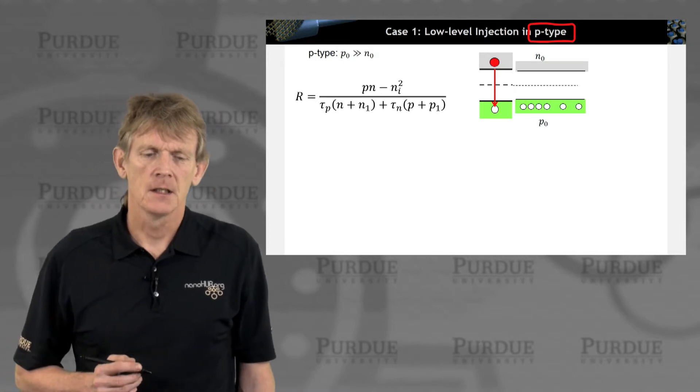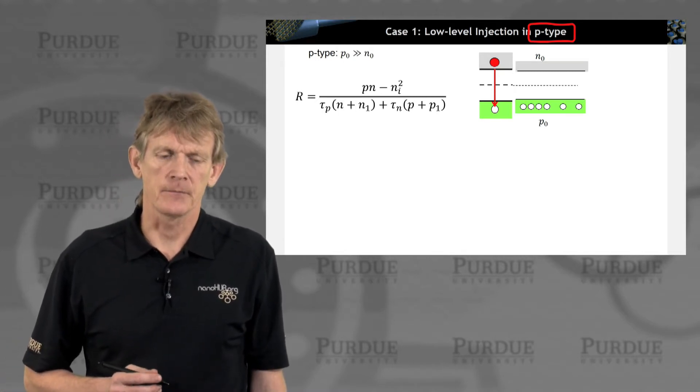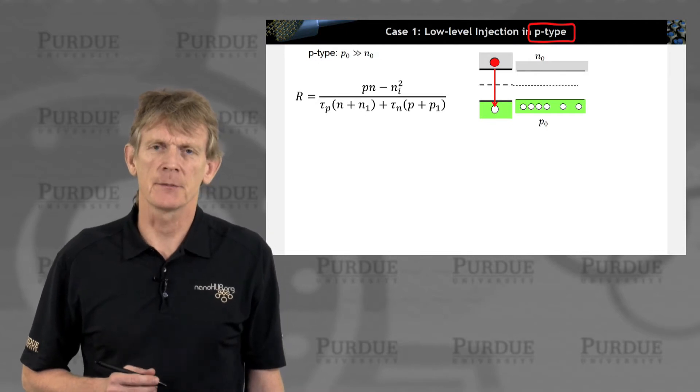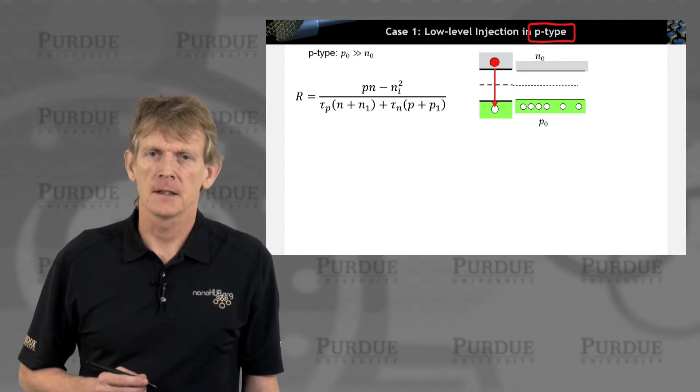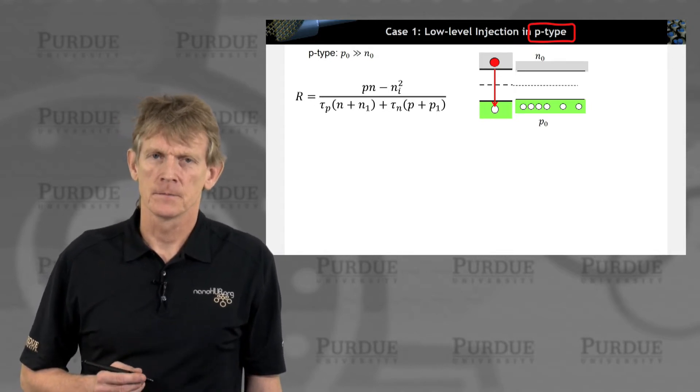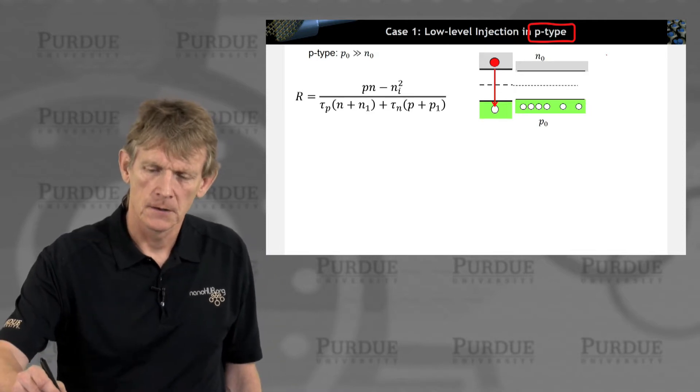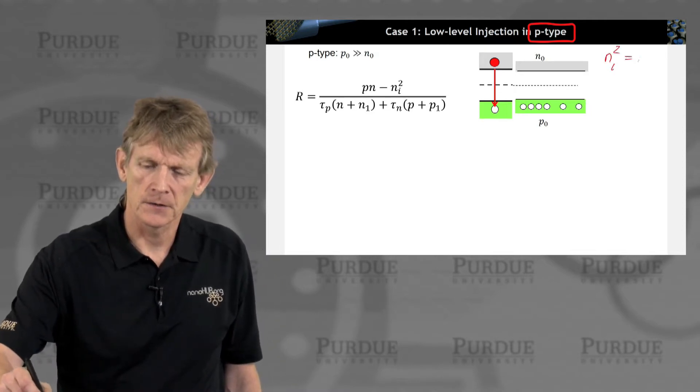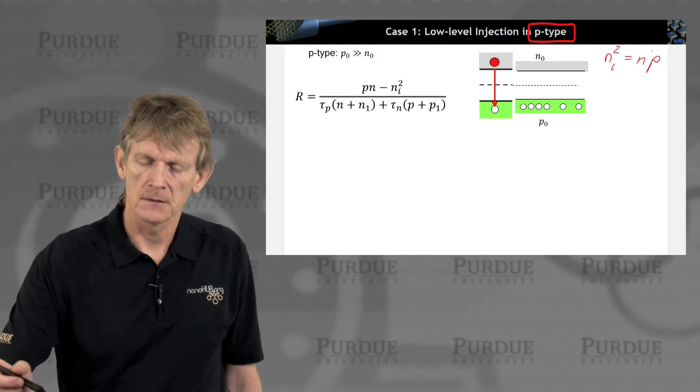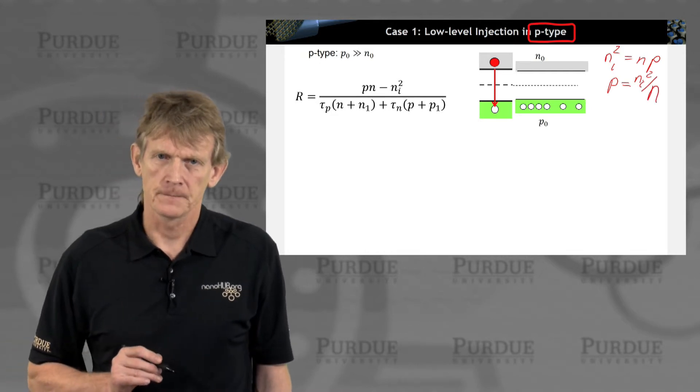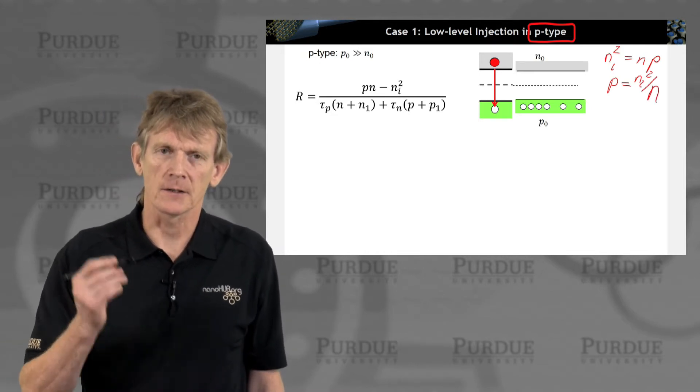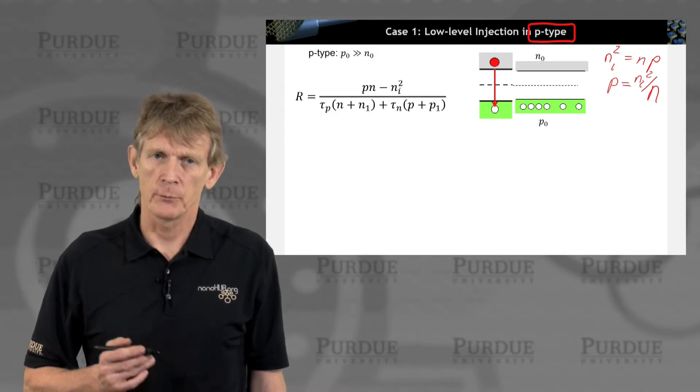And we're going to consider something called low-level injection. First of all, we'll start out with a p-type semiconductor. What does that look like? Well, you have lots of holes and you have virtually no electrons. Remember, if you have lots of holes, Ni squared equals n times p. So if the number of holes is large, larger than Ni squared, that means n is going to be small. So basically, there's no electrons up there. It's basically empty.